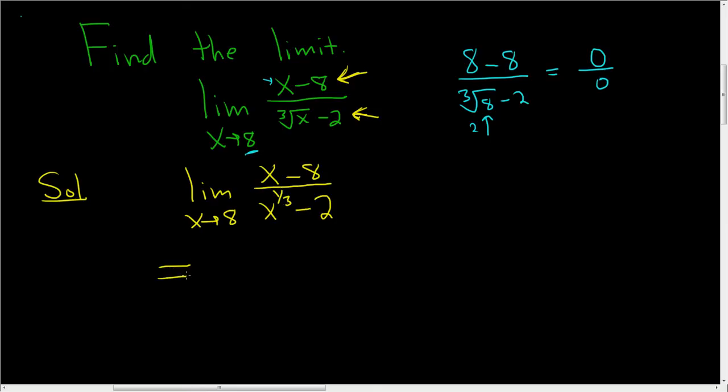Now we'll use L'Hopital's. Again, we have 0 over 0, so we're allowed to use L'Hopital's. So this is the limit as x approaches 8, and now we'll take the derivative of the numerator, so that's 1 minus 0. The derivative of 8 is 0, so we won't write it.